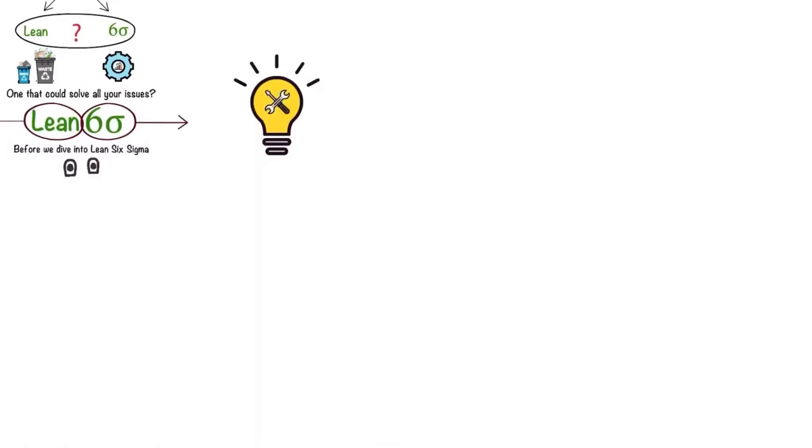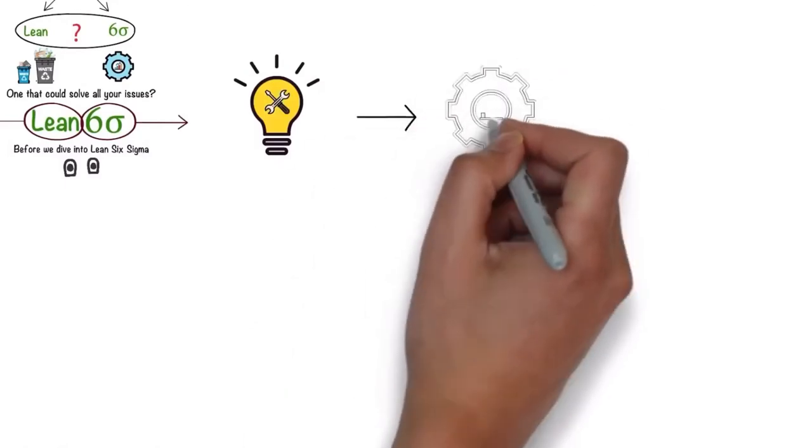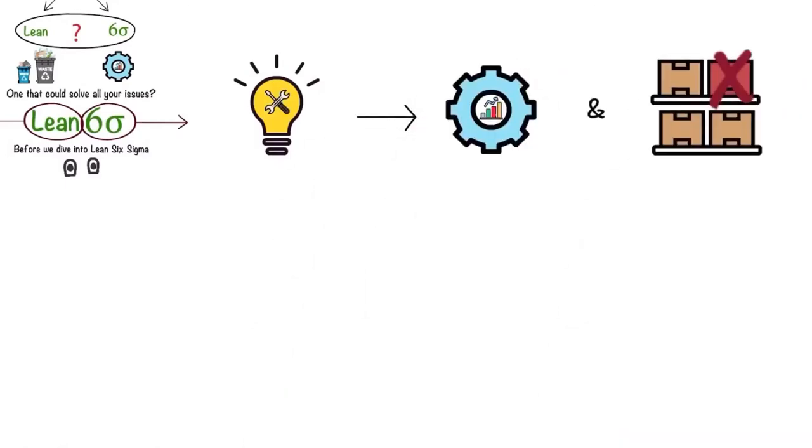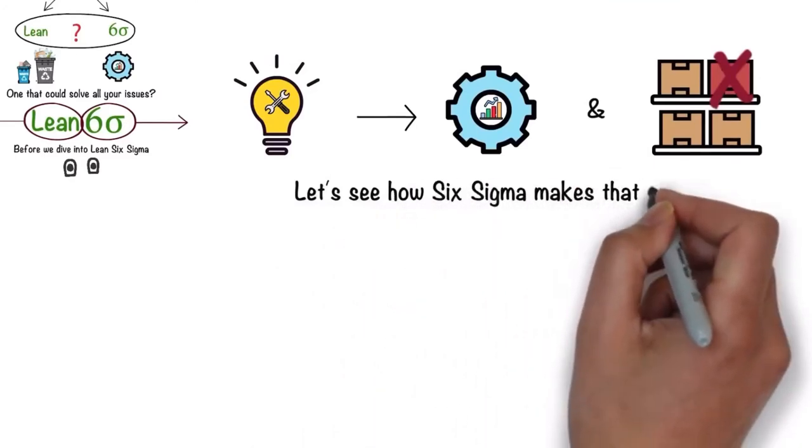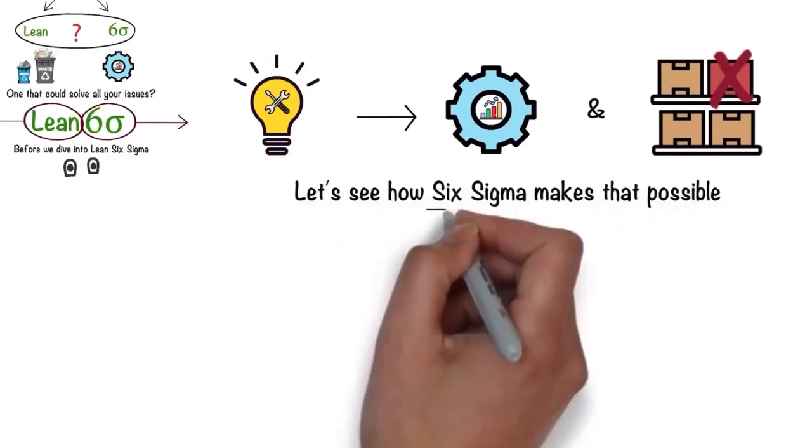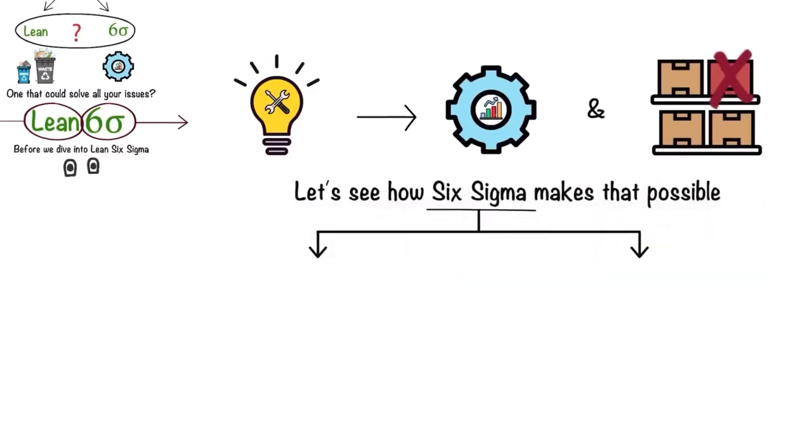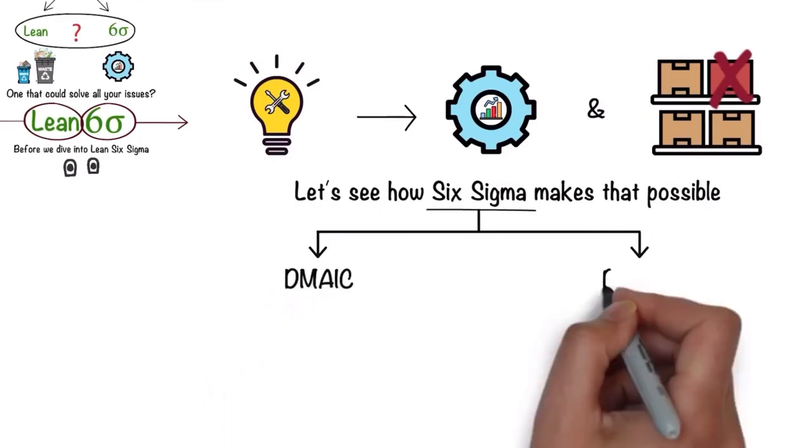Six Sigma is a set of tools and techniques that are used for process improvement and removing defects. Let's see how Six Sigma makes that possible. Six Sigma has two major methodologies: DMAIC and DMADV.